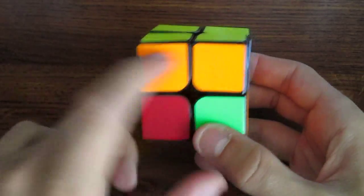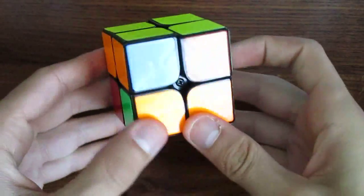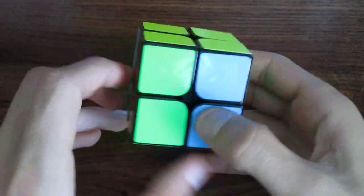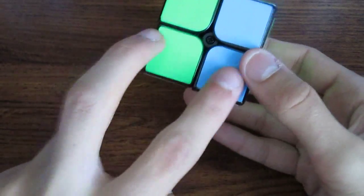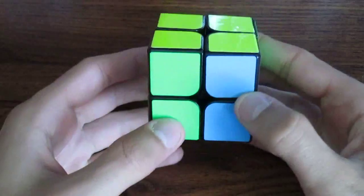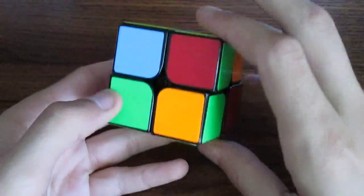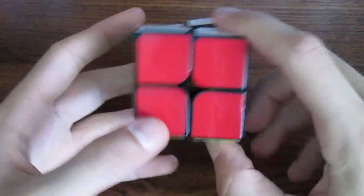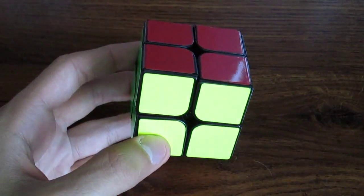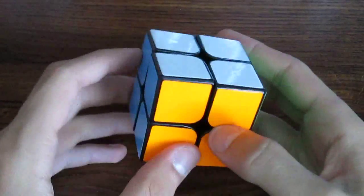And then I see a bar here and a bar here. So let's line those bars up. And then this is the case where it swaps two corners on both the top layer and the bottom layer. So we face it like this and perform the algorithm. And that solves the puzzle.